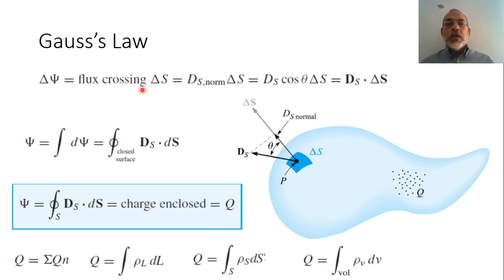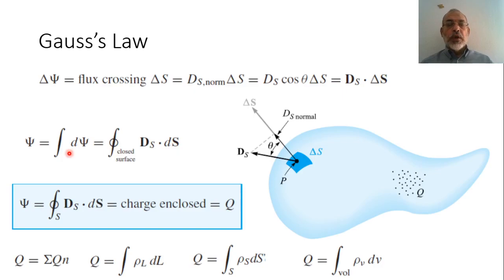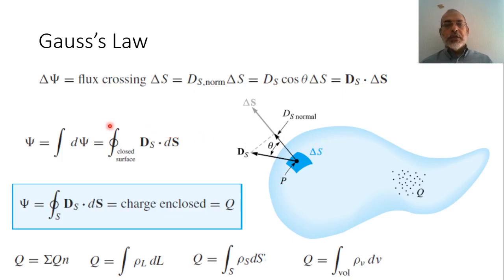The total flux would be the integration of this incremental flux. So the total flux Psi equals the integration of Delta Psi, which is the integration over a closed surface of D · dS. Take care: this closed surface integration is not a direct surface integration — the surface must be a closed surface. So the integration over a closed surface of D · dS, where D is the electric flux density and dS is the incremental surface area.